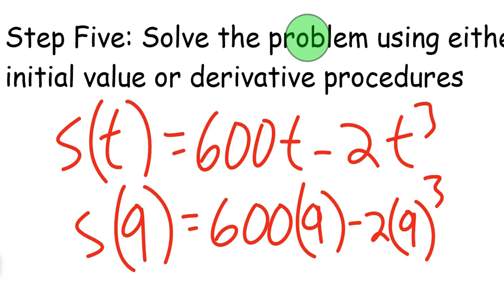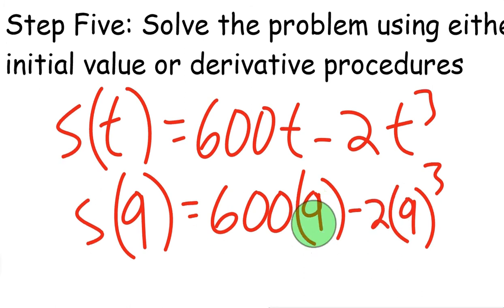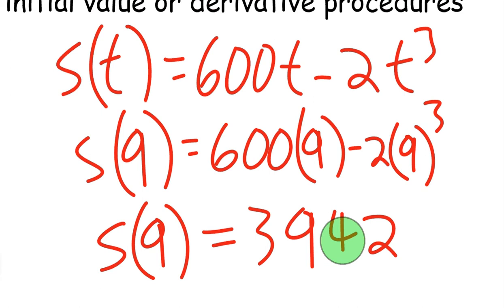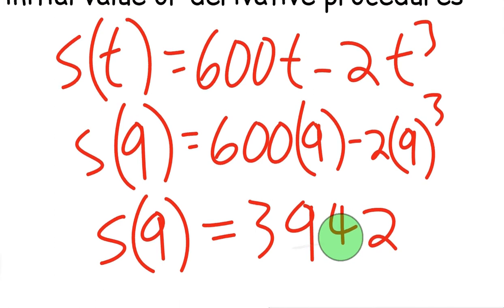First, we're going to find what S(9) is, which means the helicopter's position after 9 minutes. We're going to do that by plugging it into the position equation. Again, no derivative needed—we're basically just finding the change in y. Let's go ahead and figure out what S(9) is. So I got 3,942. That means that after 9 minutes, the helicopter is almost 4,000 feet up in the air, almost a mile up.